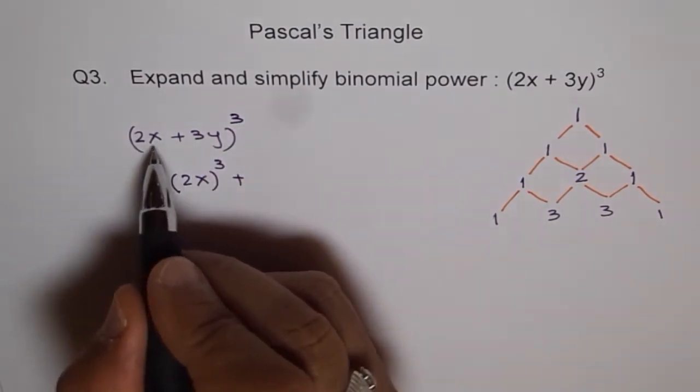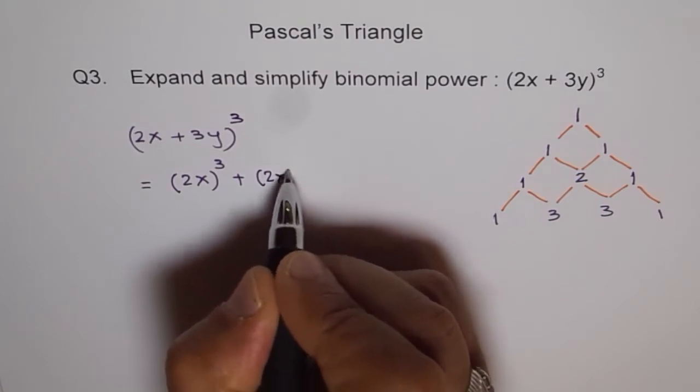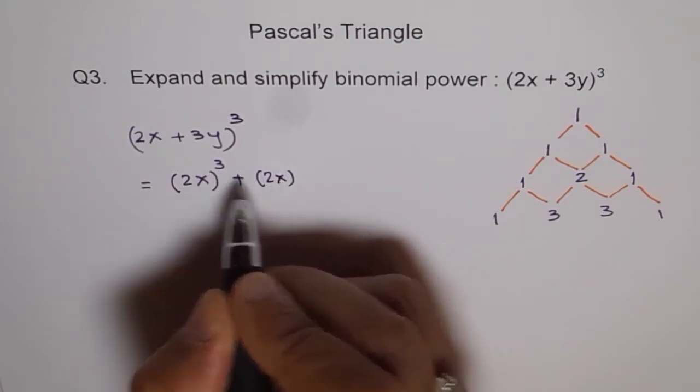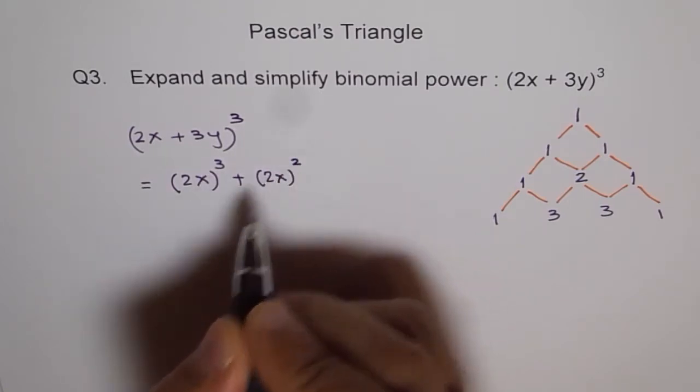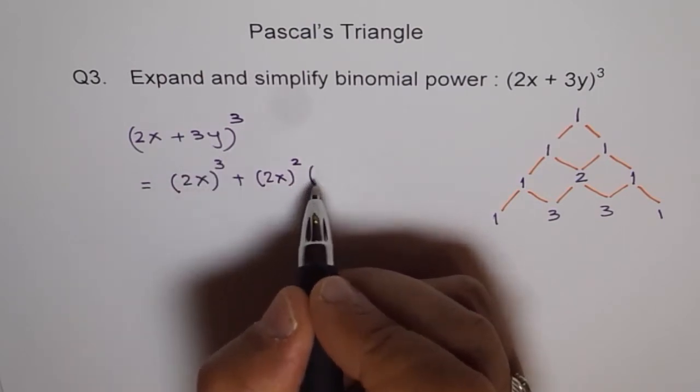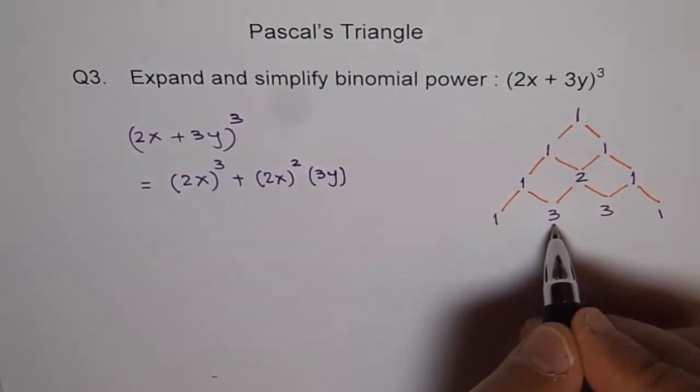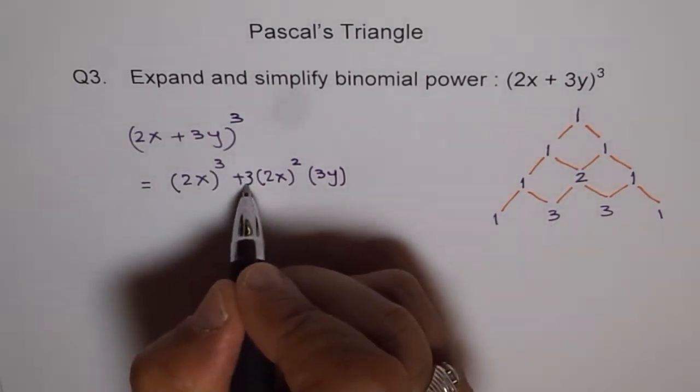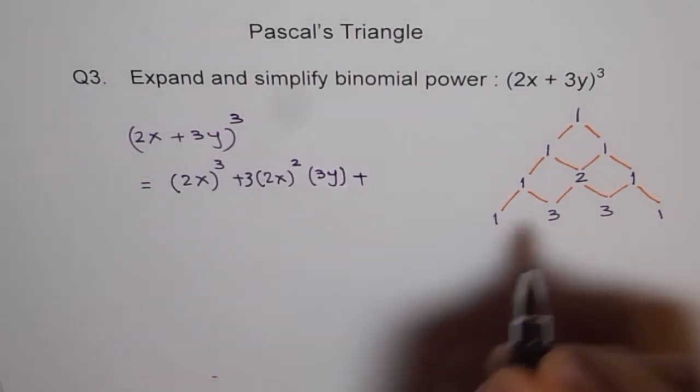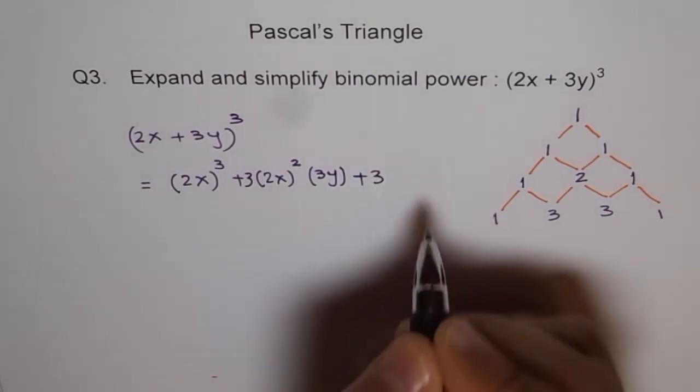Now we write this: 2x is a, but the exponent decreases by 1. So instead of 3, it becomes 2. And we get (3y)¹. And the coefficient is 3, so we have 3 here.